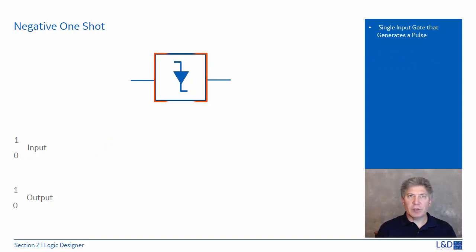The symbol here is a negative one-shot. There are a maximum of 64 one-shots. A negative one-shot responds to a negative going edge in the logic designer diagram.